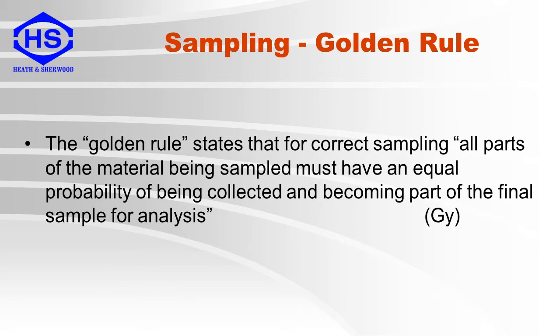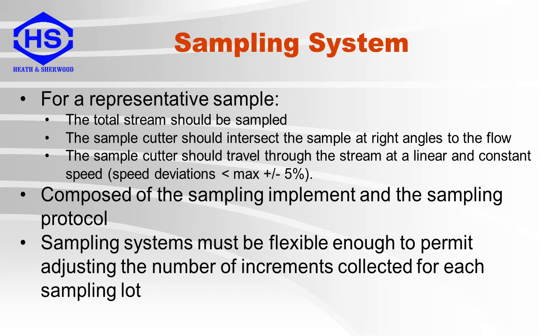In the sampling basics presentation we discussed the golden rule for sampling, which states that for correct sampling, all parts of the material being sampled must have an equal probability of being collected and becoming part of the final sample for analysis. For a representative sample, the total stream should be sampled, the sample cutter should intersect the sample at right angles to the flow, and the sample cutter should travel through the stream at a linear and constant speed.